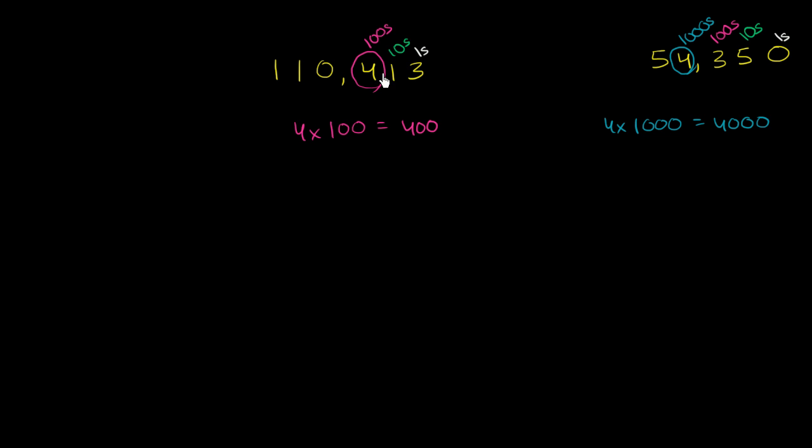This four is one place to the right of this four. This four is in the thousands. The magenta circled four is in the hundreds. So every time we move a place value to the right, each increment represents one tenth as much, assuming we have the same digit. So a four in thousands is 4,000. A four in hundreds would be one tenth as much. A four in the tens would be one tenth as much as that.